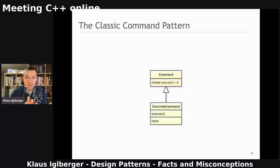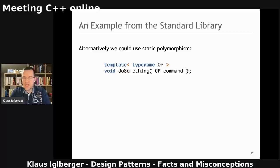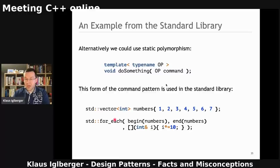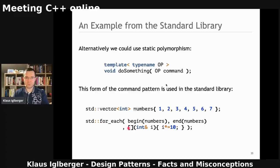But I can actually show you examples from the standard library where the Command design pattern is used for static polymorphism — if we provide some operation as a template parameter and pass it to a function. You find this in the algorithms. For instance, std::for_each: you pass a range of numbers and then also pass an action — 'please do that to all the elements.' I would argue this is the Command design pattern again. It's the same intent. It appears in templates — not object-oriented, but generic or perhaps even functional programming.